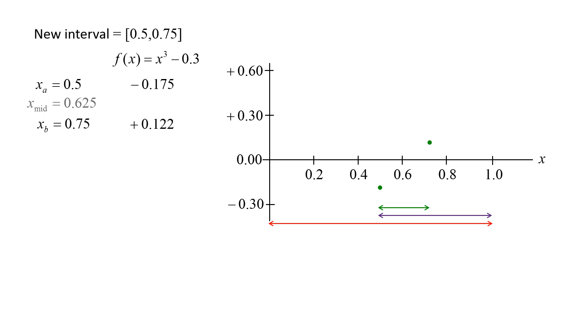We calculate xmid, which is 0.625, as well as the function at xmid, which is approximately negative 0.056. Since the sign of the function does not change between xa and xmid, we know the root must lie between x equals 0.625 and x equals 0.75, and we can discard the left half of the interval.